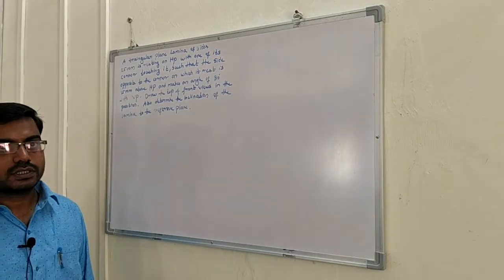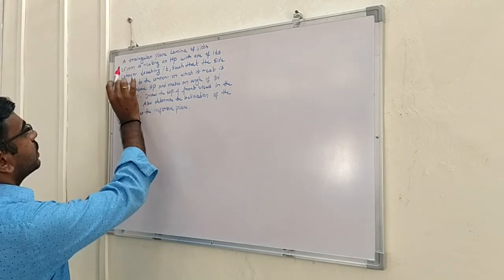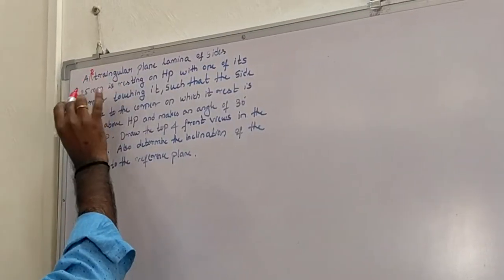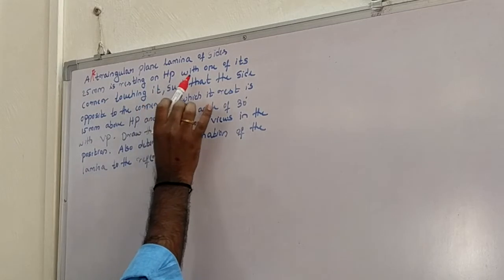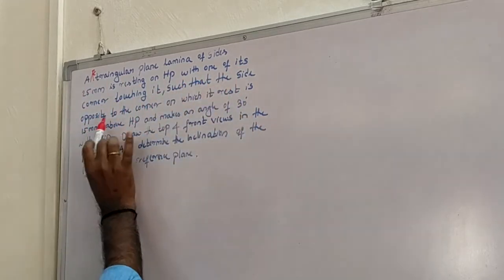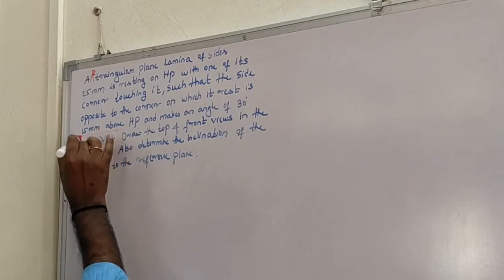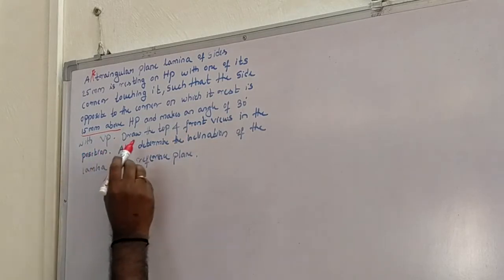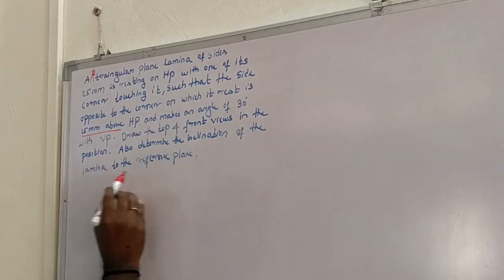Today I am going to discuss problem 1 of projection of surfaces. A triangular lamina — consider this as an equilateral triangular lamina of sides 25 mm — is resting on HP with one of its corners touching it, such that the side opposite to the corner on which it rests is 15 mm above HP and makes an angle of 30 degrees with VP. Draw the top and front views, and also determine the inclination of the lamina to the reference plane.